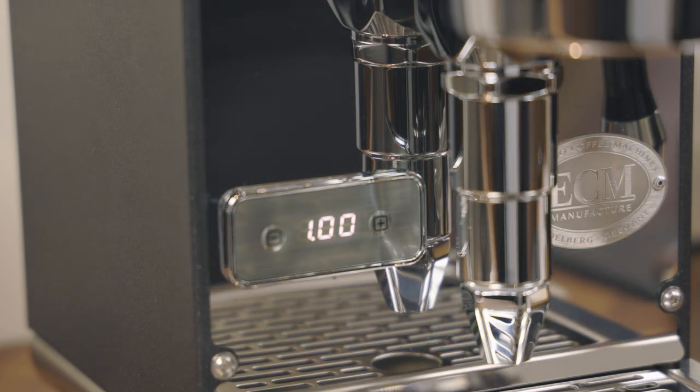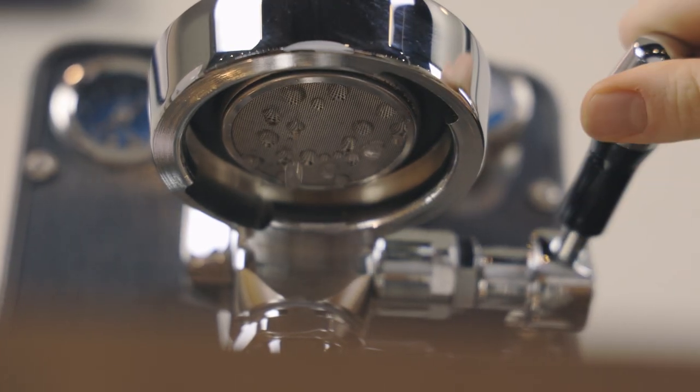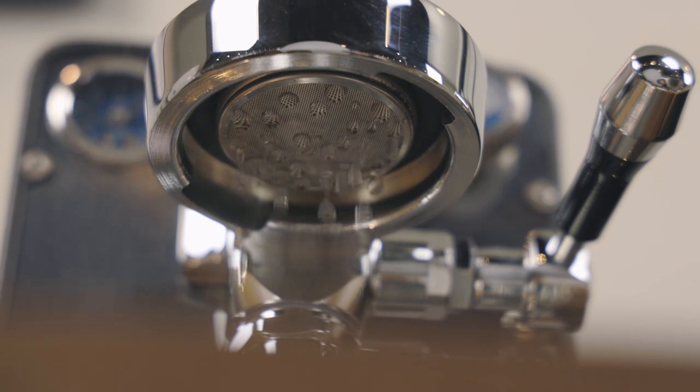The PID will light up and display the temperature. Engage the brew lever until water comes through the group head. This will ensure that the boiler is filled.